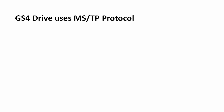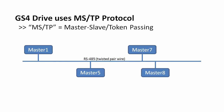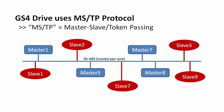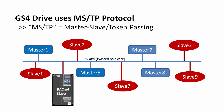One side note: the GS4 drive supports MSTP protocol — that's master-slave token-passing over the RS-485 network. All that means is you have a bunch of BACnet master controllers and slave devices on your RS-485 network. The lowest-addressed master queries any devices it wants to talk to. When it's done, it passes control to the next highest-addressed master, and so on. Only masters can initiate conversations on the network, and only the currently active master — the one with the token — can speak. Slave devices can only respond to requests; they can't generate them. The GS4 drive is a slave on the BACnet MSTP network.